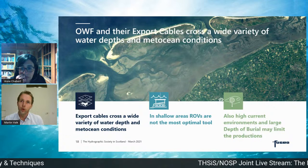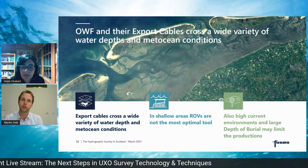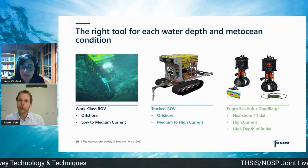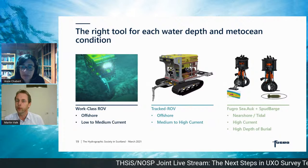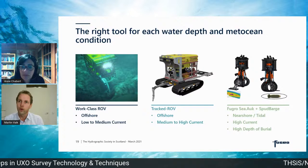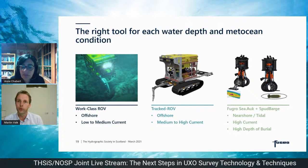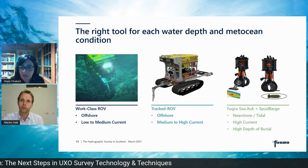Offshore wind farms and their export cables cross a wide variety of water depths and metocean conditions. ROVs typically struggle in shallow water and high-current environments, and large depths of burial may limit feasibility of dredging from a normal ROV. During project preparation, it is recommended to look at different water depths and metocean conditions. For standard offshore operations, the work-class ROV is the right tool. However, when current windows become smaller, a tracked ROV can significantly increase workability in nearshore and tidal areas.